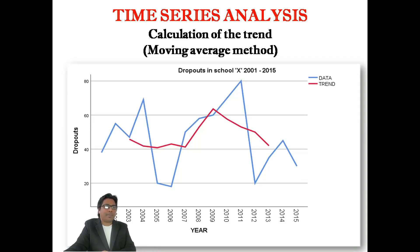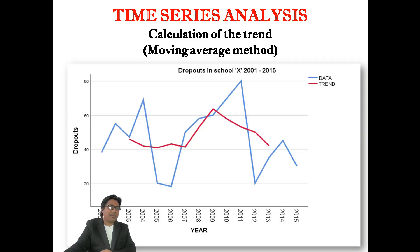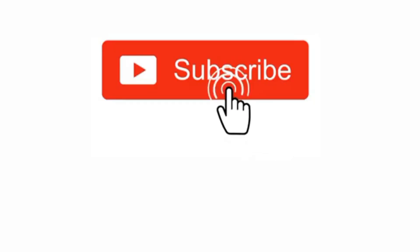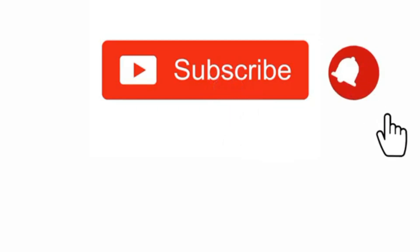We used a five-year total here, but researchers can use three years, two years, or seven years depending on the purpose or objectives of the research. Not only years — you can also use days, weeks, or months. With this, let me wind up today's lecture. If you have any comments or questions, you can write in the comment box. See you in the next lecture, thank you.